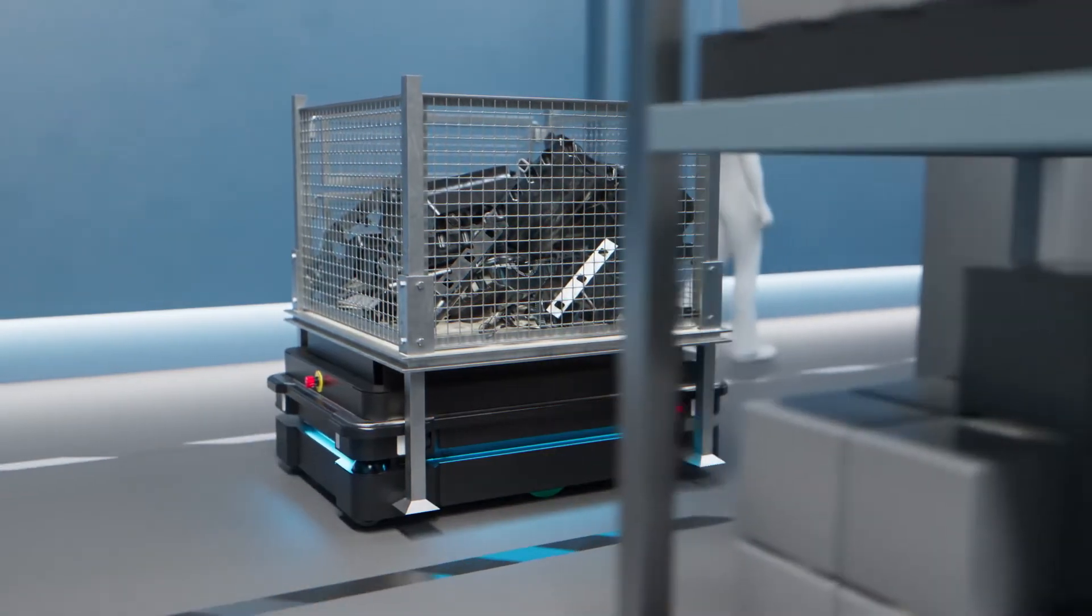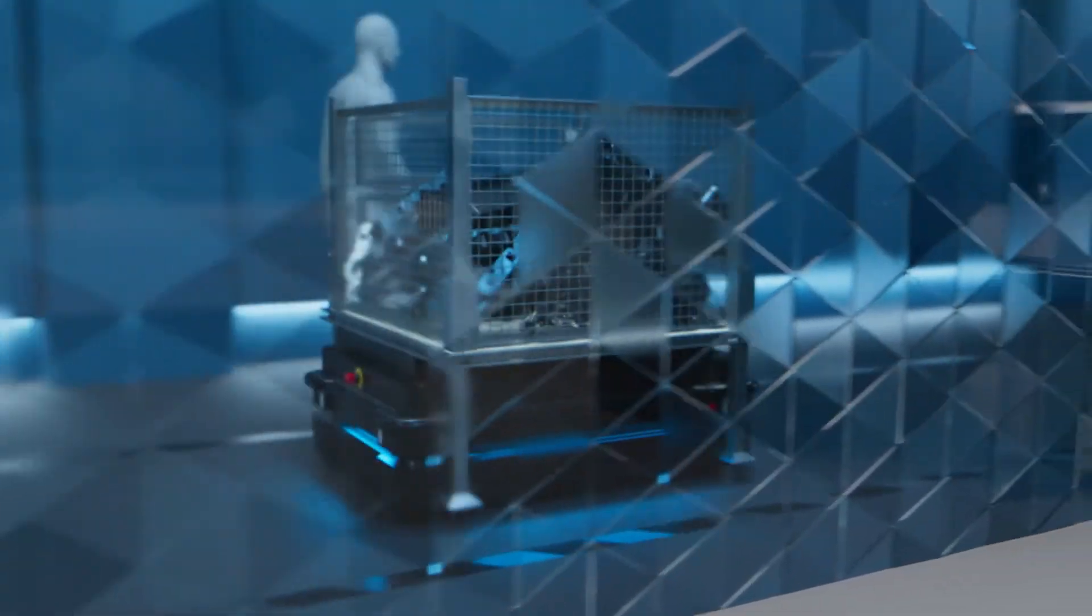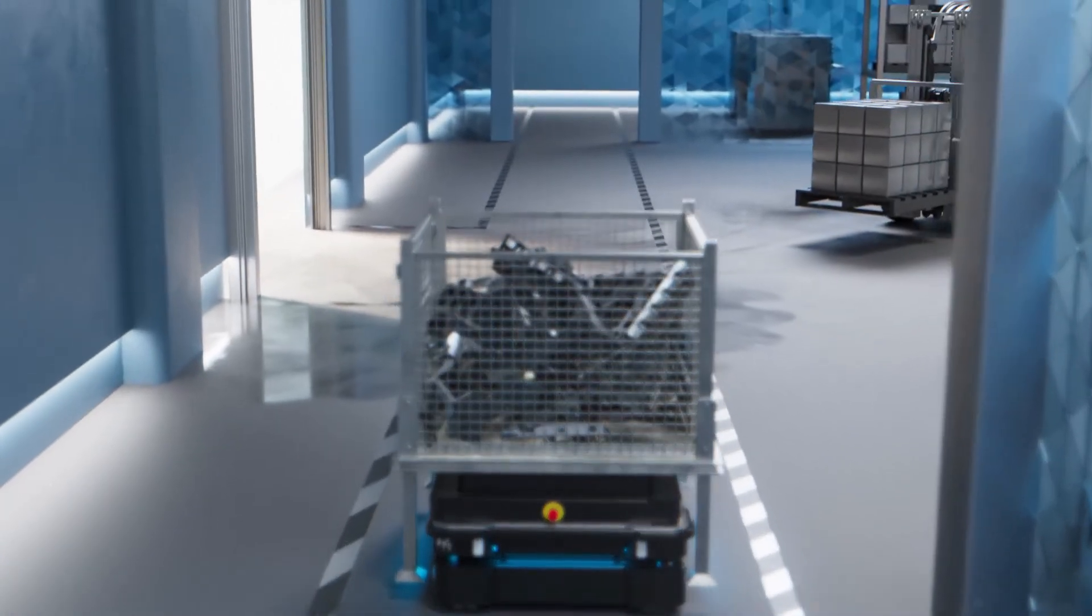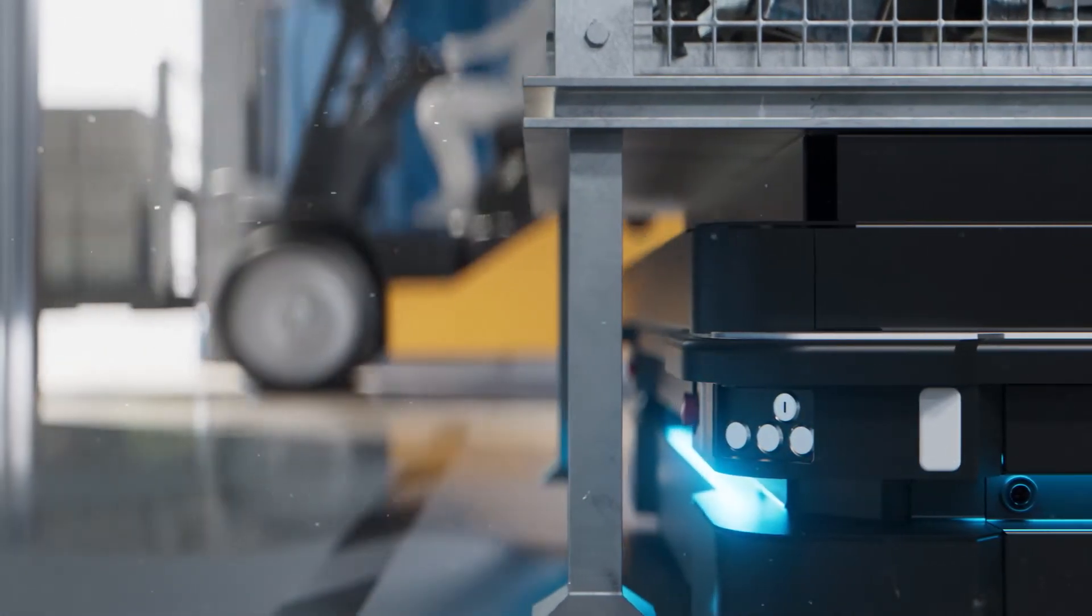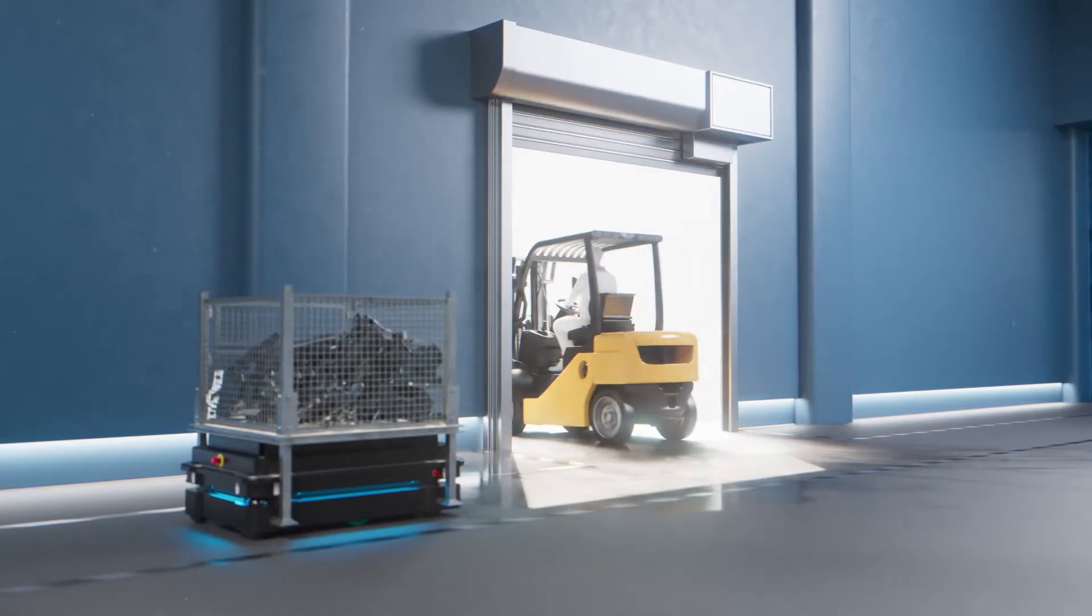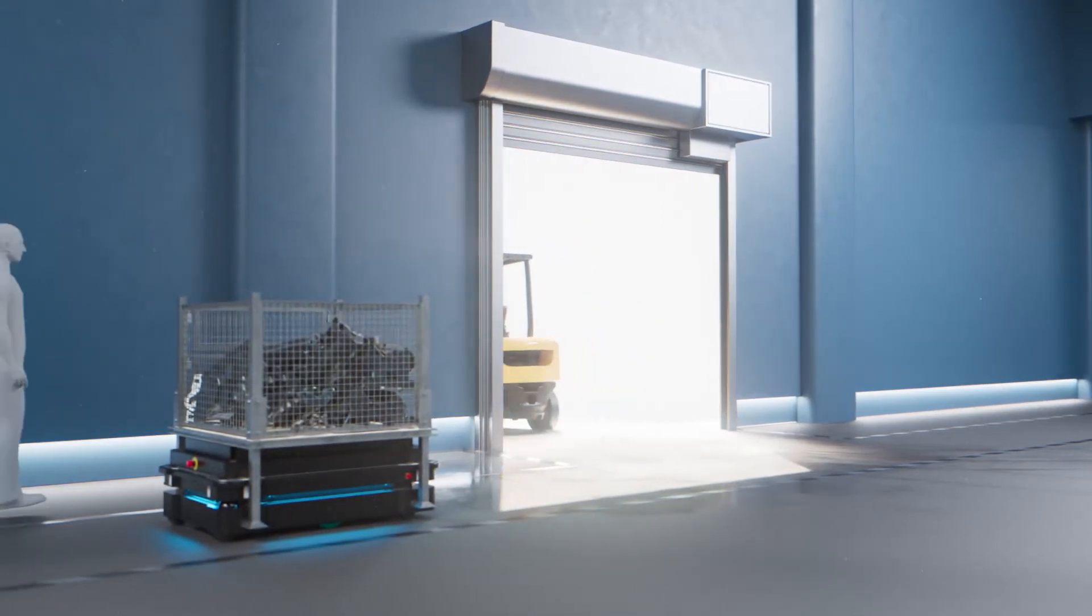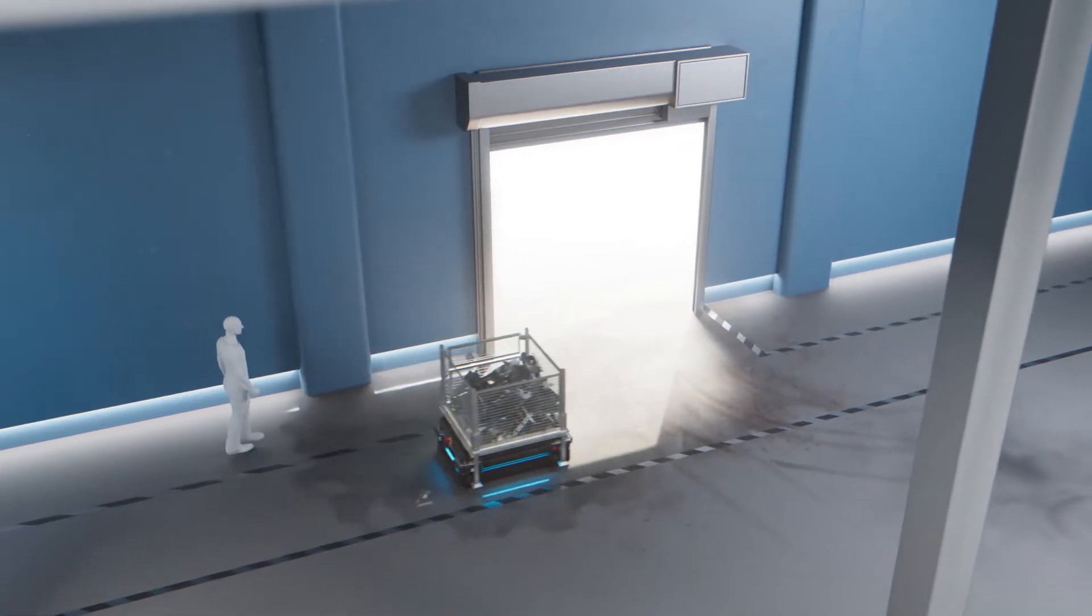The MiR 600 and MiR 1350 are designed to work within a wide range of applications and environments. Whether you need to optimize internal logistics in your core production, raw material storage, or your inbound and outbound logistics, the MiR industry-grade-proven robots are your solution.